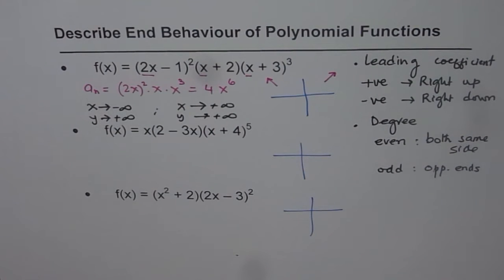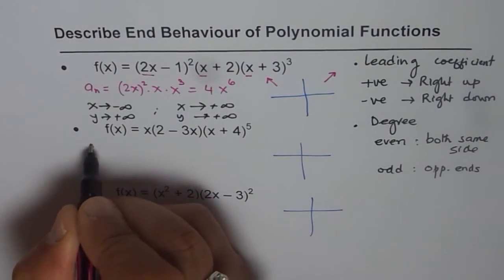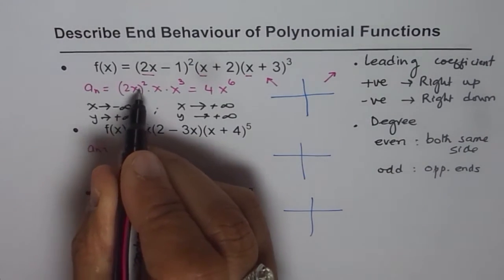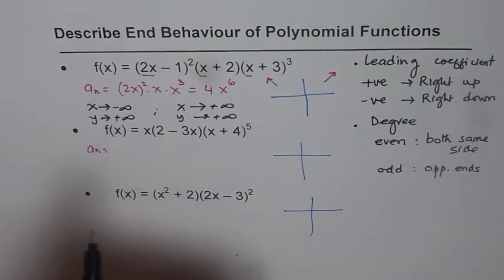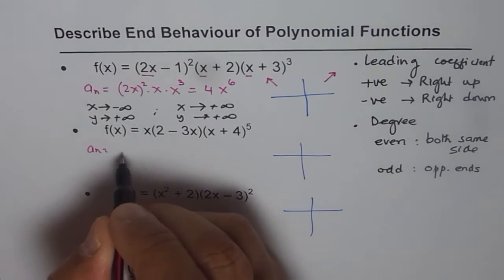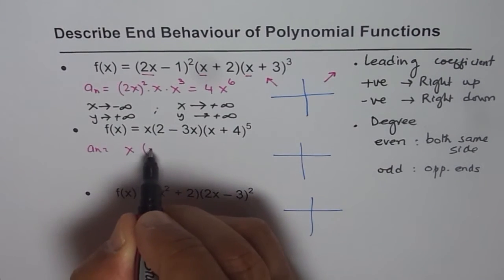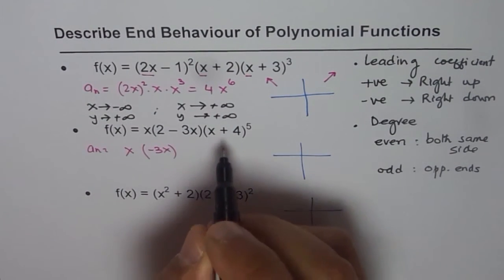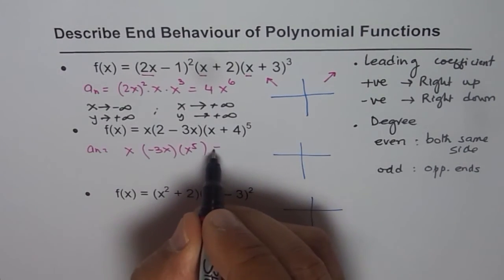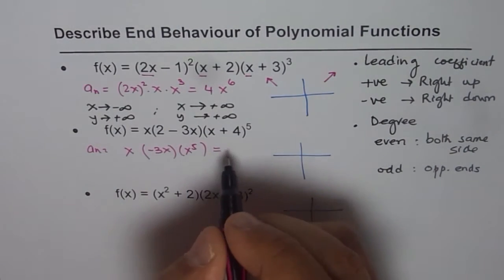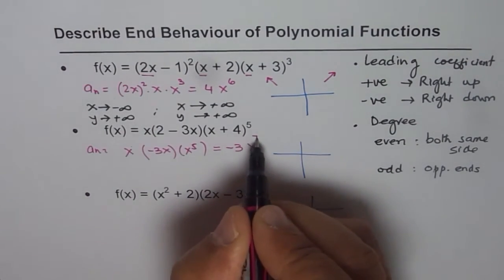Now for the second example, I'll find the leading term. We have x times negative 3x, so be careful about that negative sign, and then x to the power of 5. When I multiply all of this I get negative 3x to the power of 7.